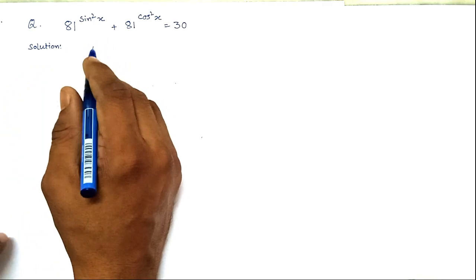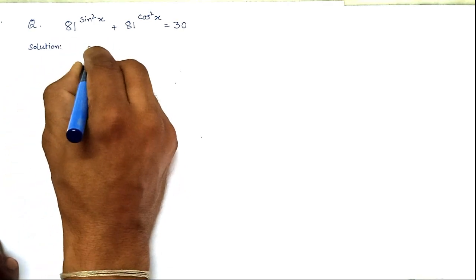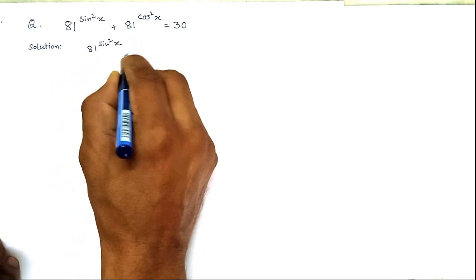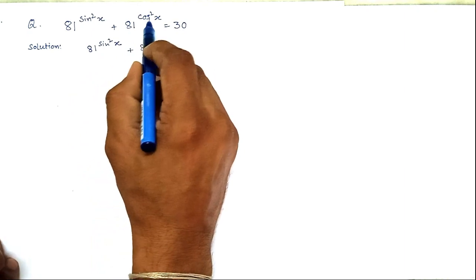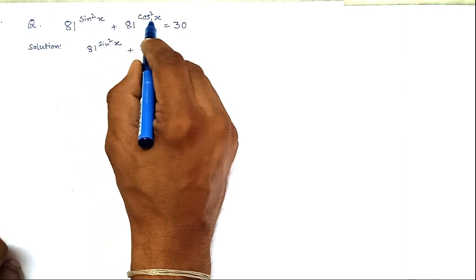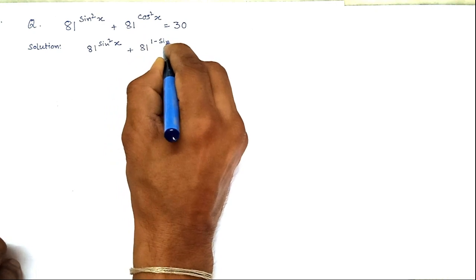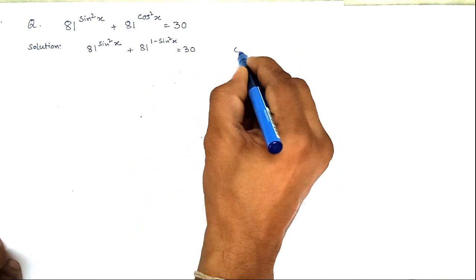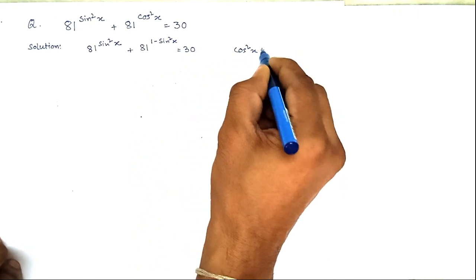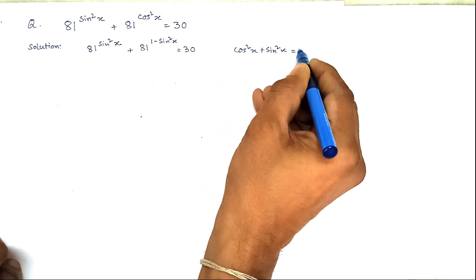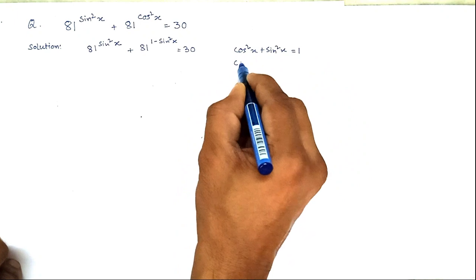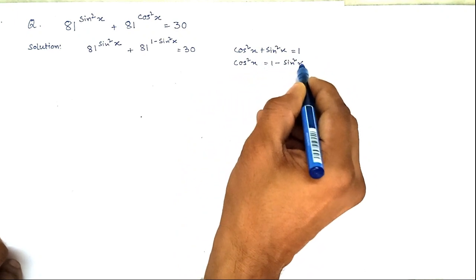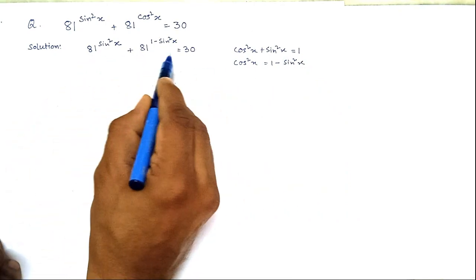We will simplify further: 81 to the power sin²x plus 81 to the power cos²x equals 30. We will write cos²x as 1 minus sin²x. This comes from the identity cos²x plus sin²x equals 1, so cos²x equals 1 minus sin²x. So this equation holds good.